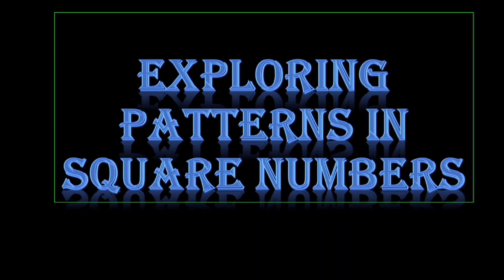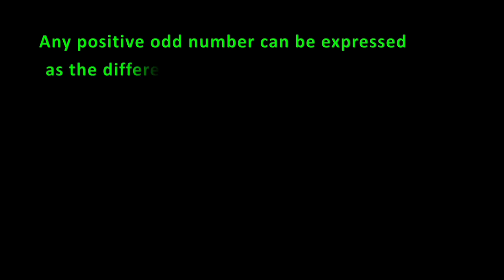Dear students, already we have learnt what are square numbers, how to find square numbers, and many more. But now let's explore some interesting patterns in square numbers. Number one: any positive odd number can be expressed as the difference of two consecutive square numbers.